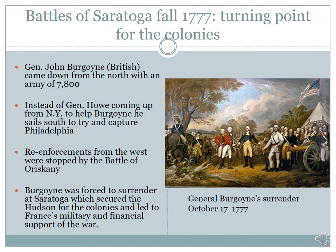General John Burgoyne was coming down from the north, down the Hudson River Valley, with an army of about 7,800 men. General Howe, also a British general stationed in New York, had promised Burgoyne he would come up from New York to help in the battle anticipated around Saratoga. The British were trying to take the city of Albany, but the battle actually takes place at Saratoga. However, General Howe decides that instead of going north to reinforce Burgoyne's army, he is going to sail south and try to capture Philadelphia. Because of this decision, he really leaves Burgoyne very vulnerable.